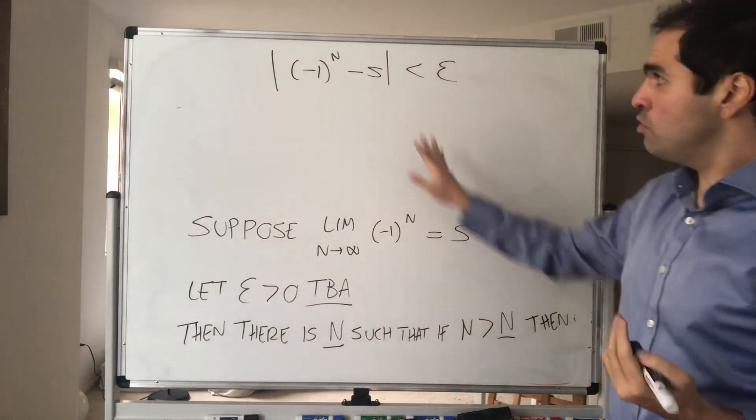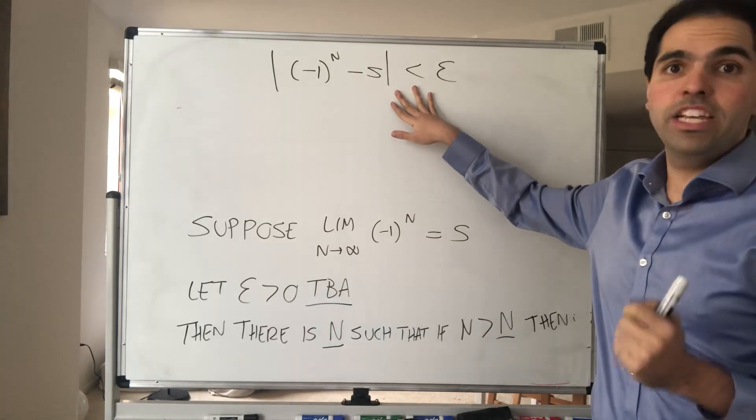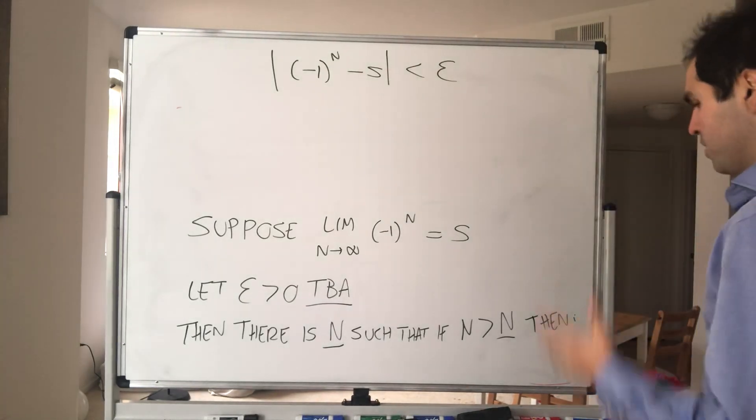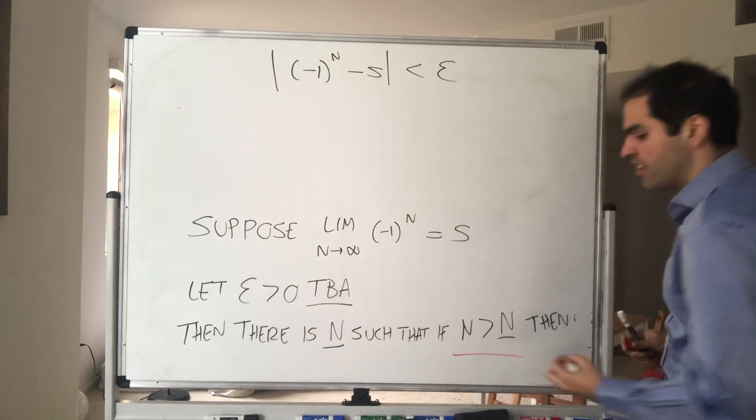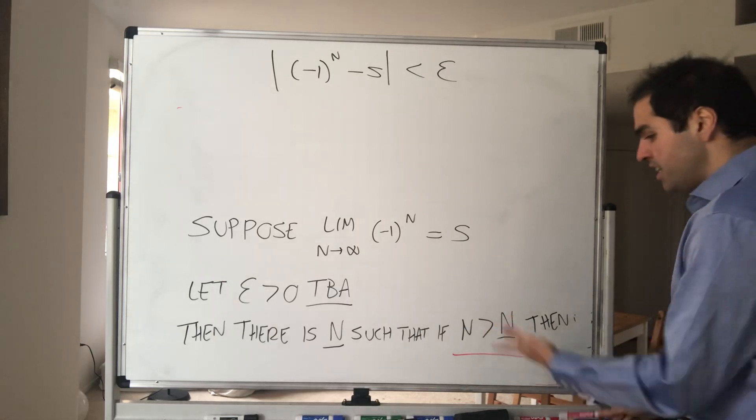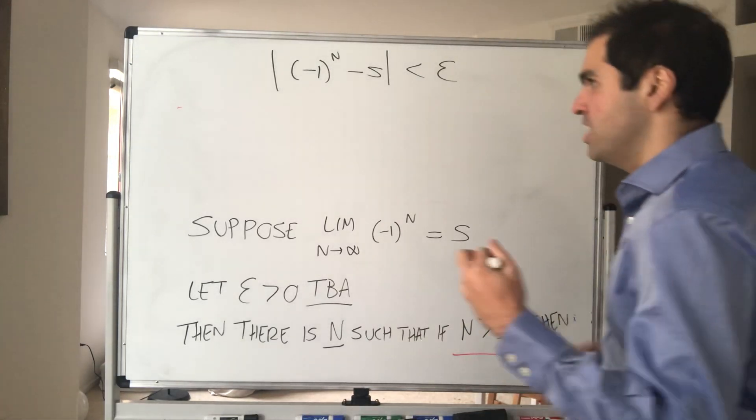And what we would like to do is explore this equation to find some information about s. Now notice, this thing is true for all n bigger than that threshold. In particular, it is true for all even values bigger than that threshold.